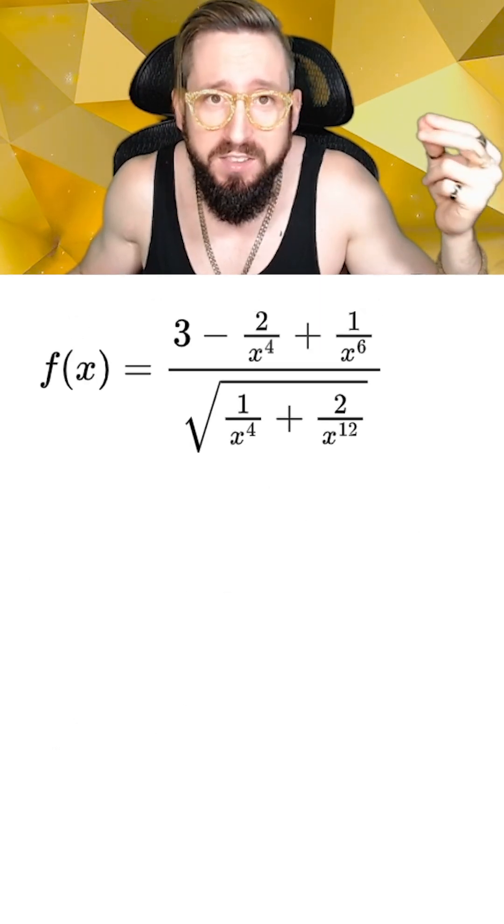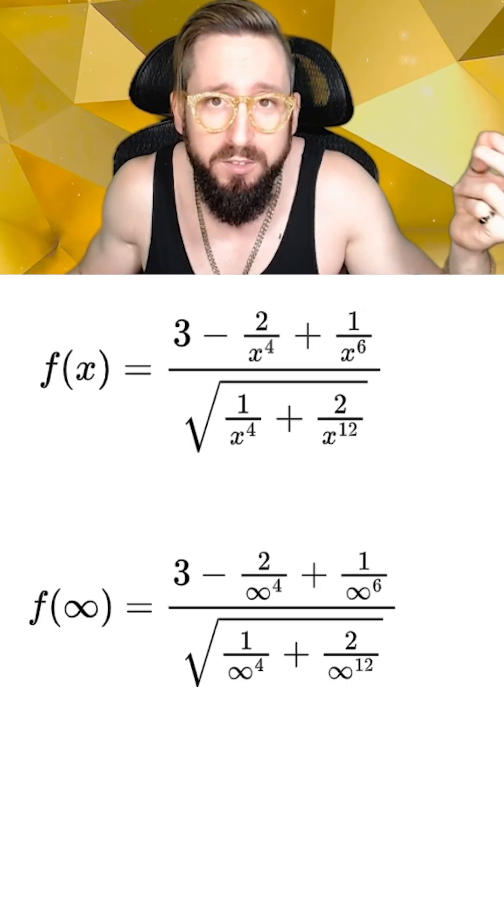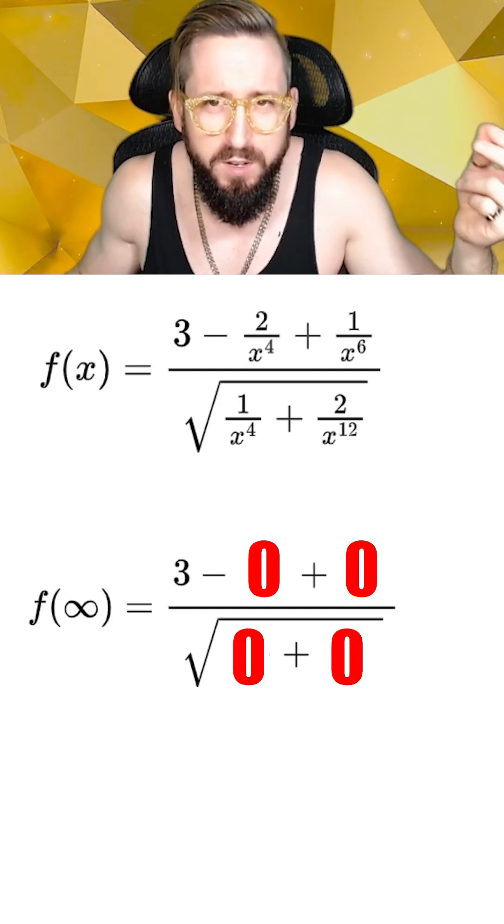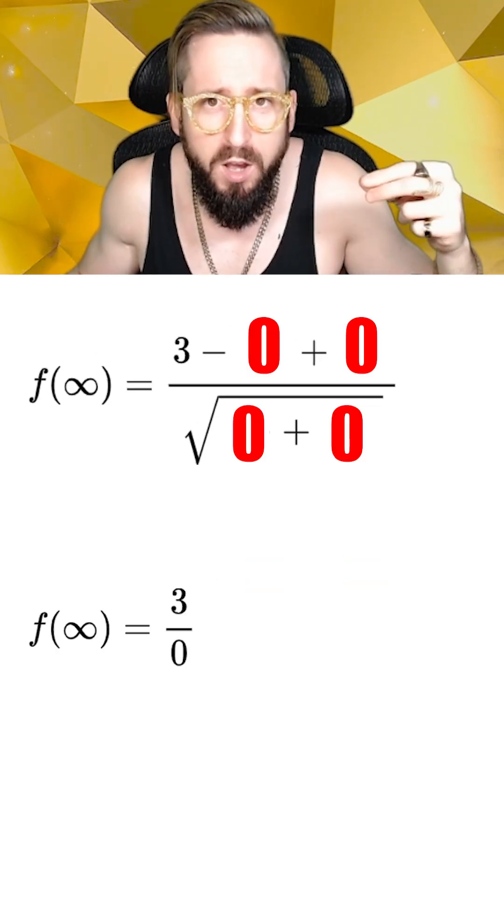Now we can simplify our fractions and take the limit by plugging in infinity for x. Doing so is going to get rid of a lot of terms, because we're just dividing by infinity. So now we're just going to be left with a 3 on the top and a 0 on the bottom.